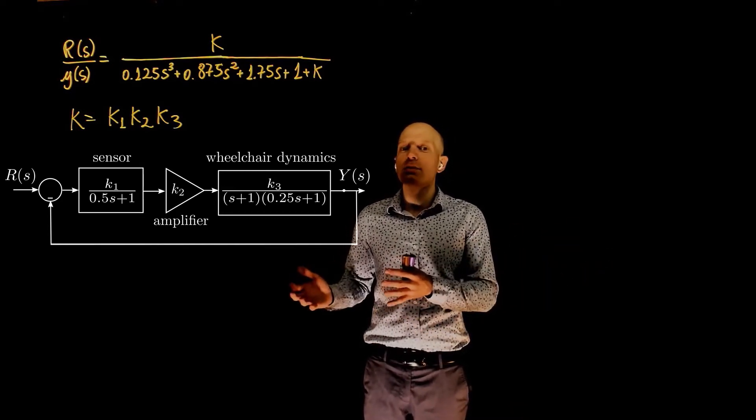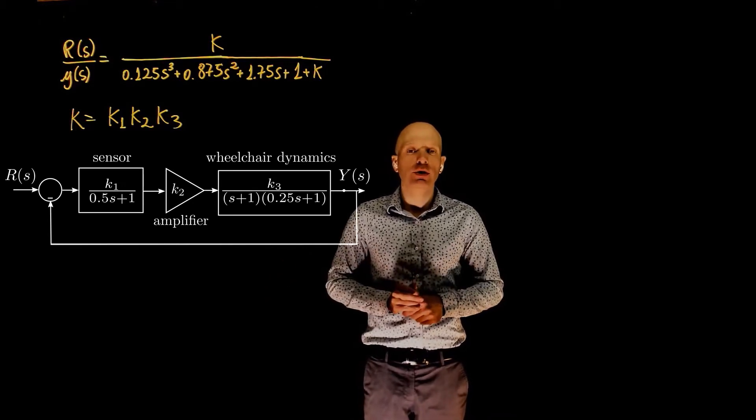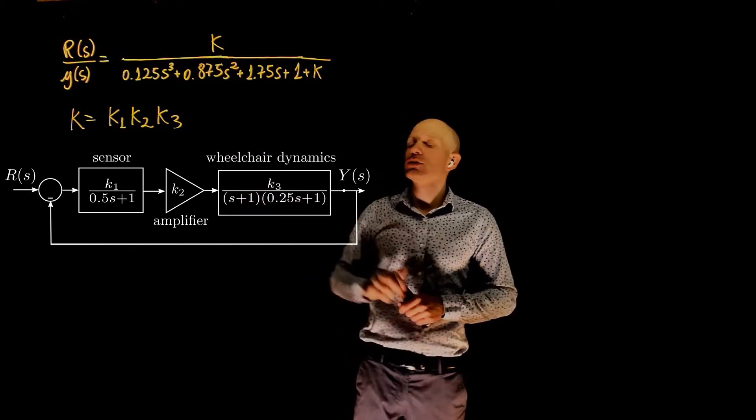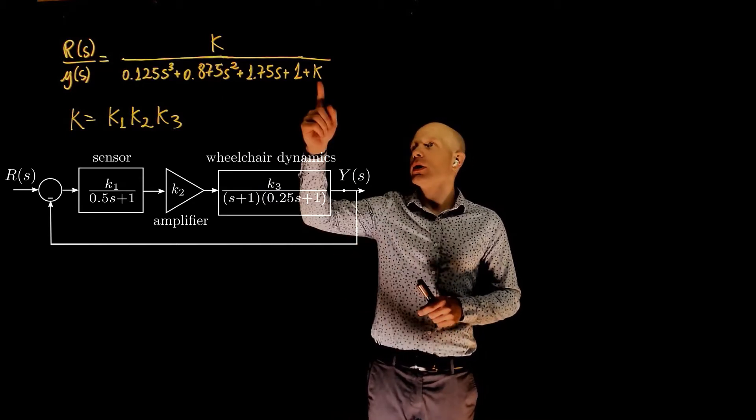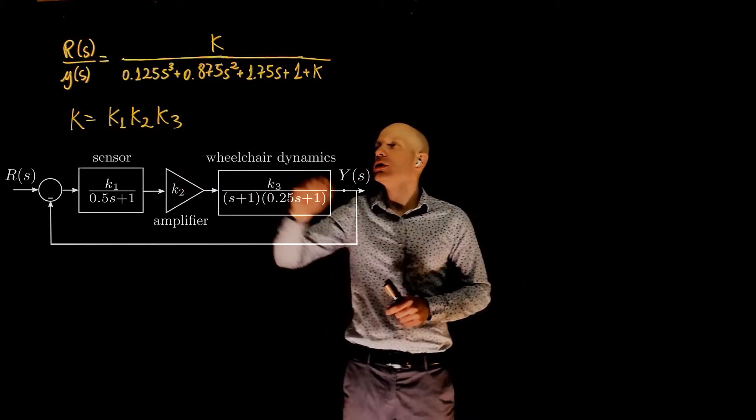To do that, the first step is, of course, to find the closed-loop transfer function. I went ahead and calculated, here is the closed-loop transfer function of our system, where k is k1, k2, and k3.